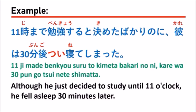In this sentence, after つい, you see they say つい寝てしまった。 So it's in the て-form. The sentence says he decided to study until 11 o'clock — it's not you but another person, he or she. She decided she would study until 11 o'clock.